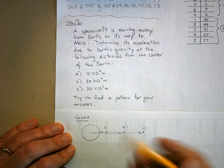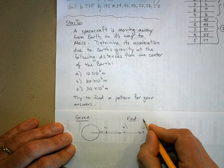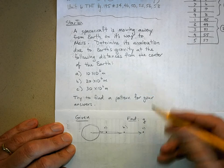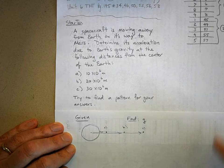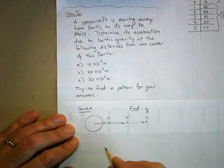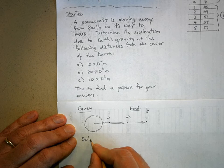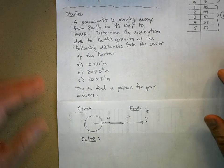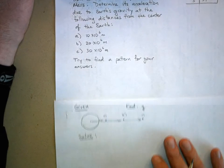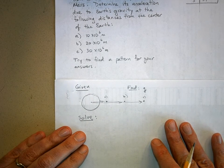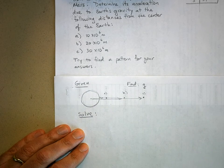What are we trying to find? We want to know what is the acceleration of gravity at these three distances away from the center of the Earth. So let's solve it.